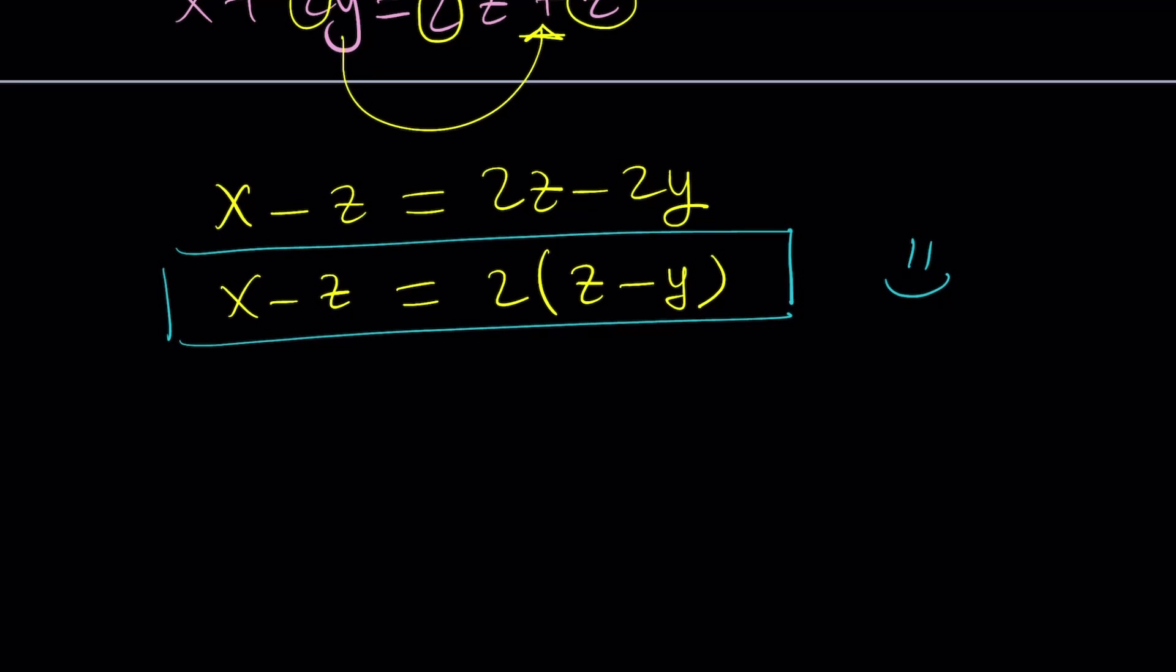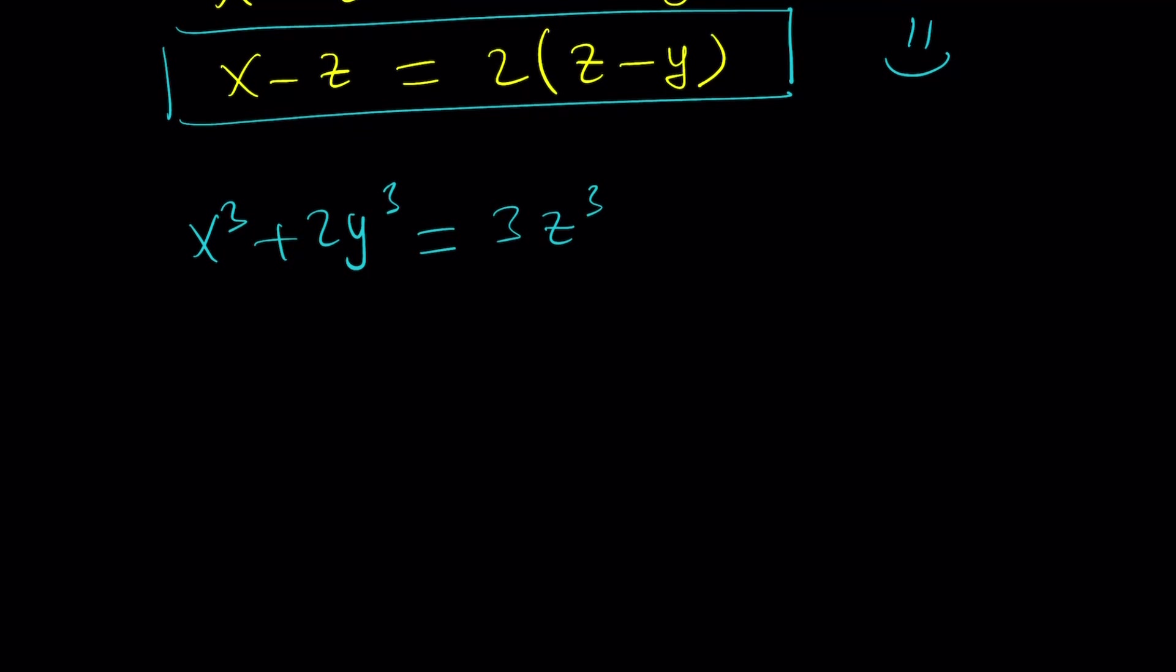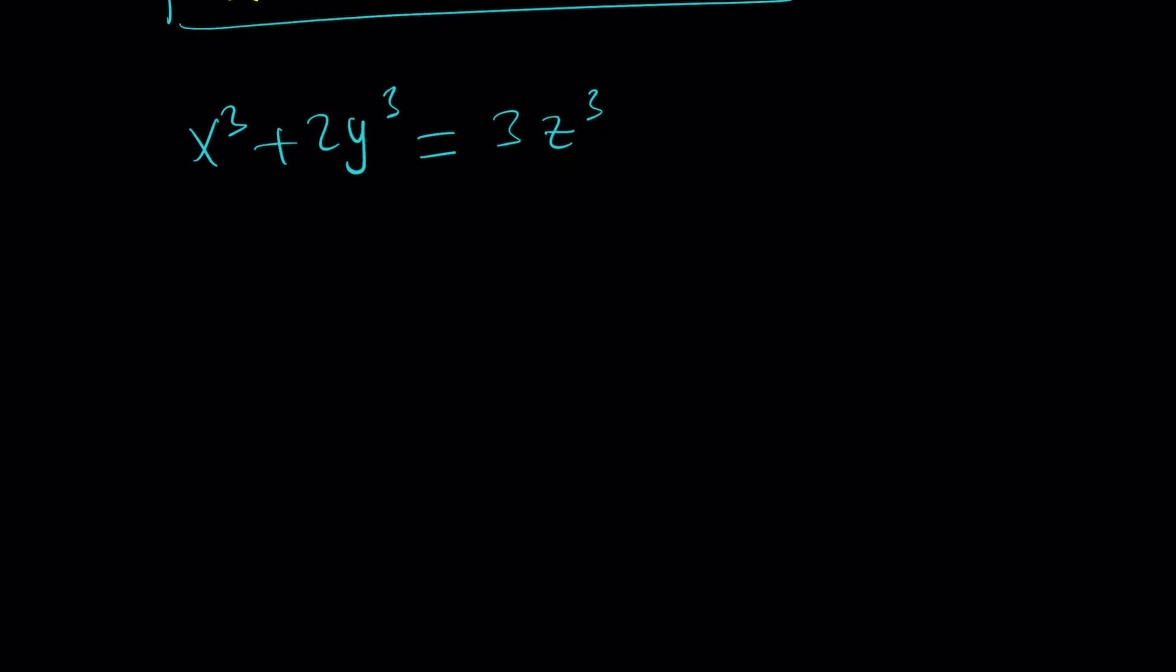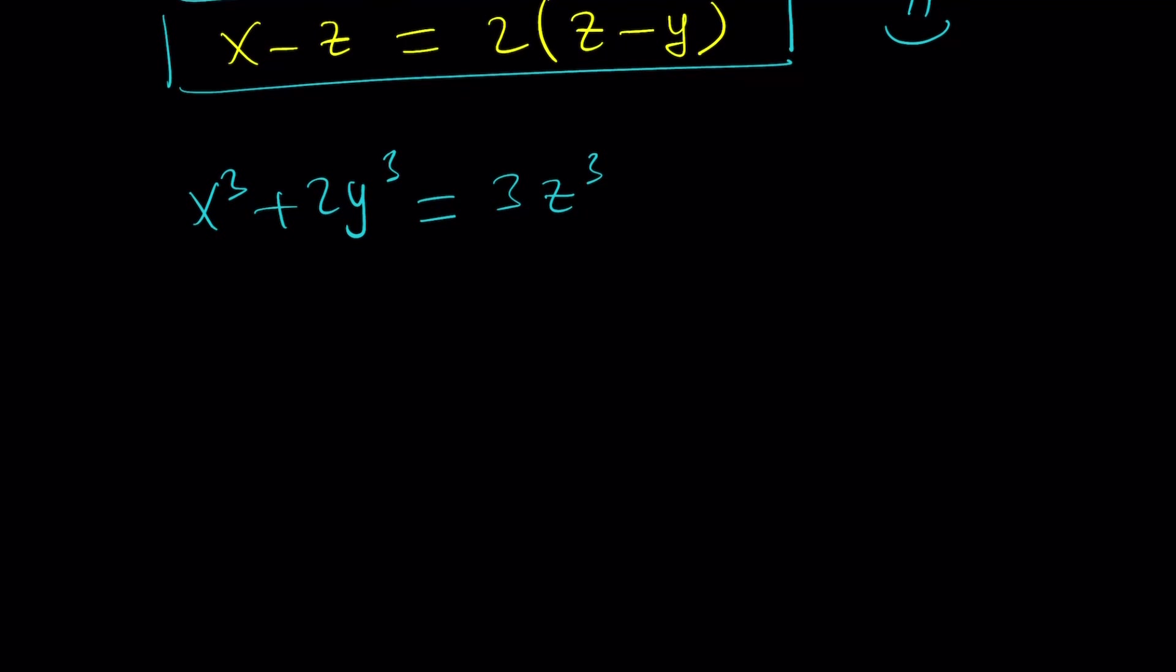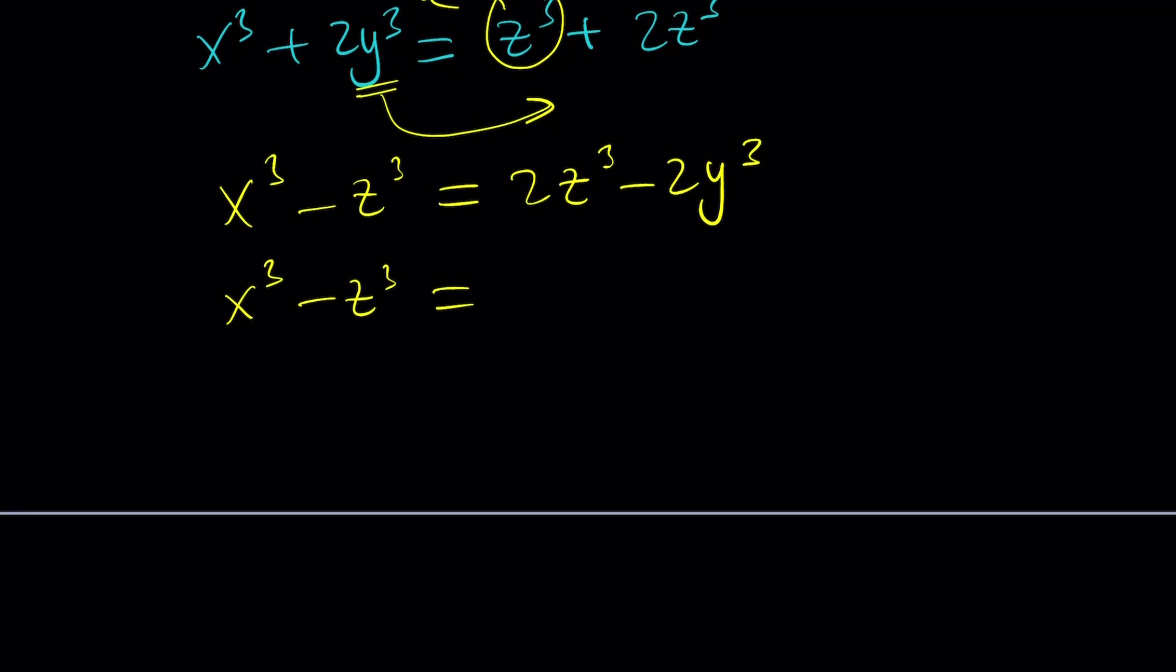Now we're going to work with the second equation, which is x cubed plus 2y cubed is equal to 3z cubed. You get the idea? But they're different. Now let's see. I can do the same thing, right? Well, let's try. I can write the 3z cubed as z cubed plus 2z cubed. And then, bring this over here, and then send this over to the right. It's going to be x cubed minus z cubed equals 2z cubed minus 2y cubed. And then by factoring, I can take out a 2.